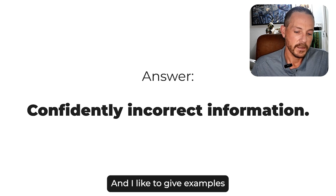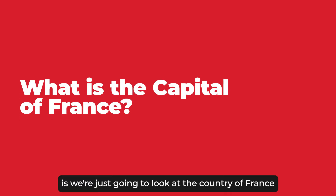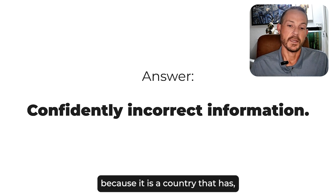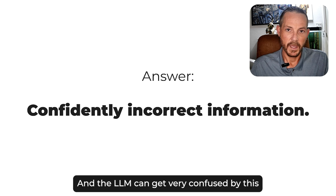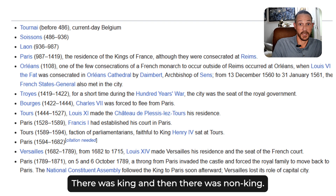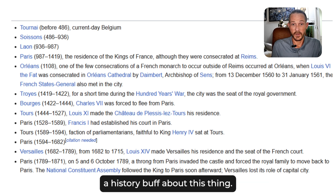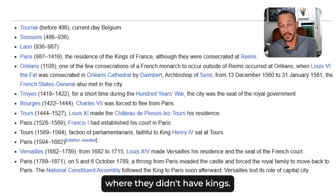I like to give examples of how these things work, so we're going to look at the country of France. The reason is because it has a very clear dichotomy of time, and the LLM can get very confused about this if you don't give it context. France had a king, and then there was non-king. You don't have to be a history buff — there was a time in France where they had kings, and a time where they didn't.